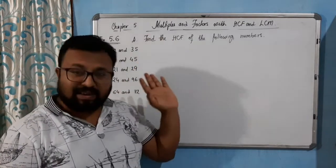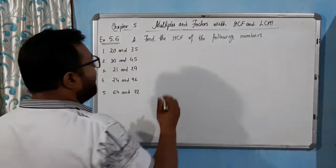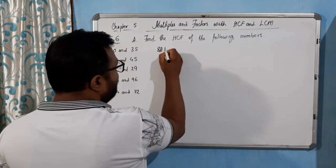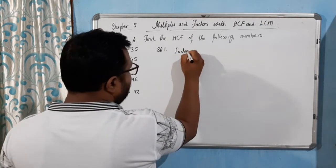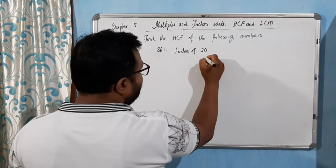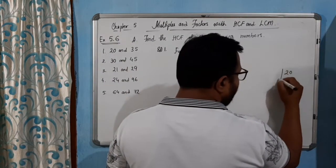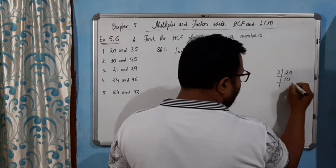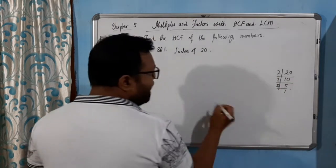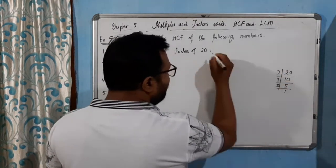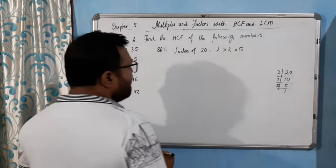So we need to find the highest common factor. For that we need to find the factors. Factors of 20: we divide 20 by 2 to get 10, then 10 by 2 to get 5, and 5 by 5 to get 1. So 20 = 2 × 2 × 5. Is that clear?